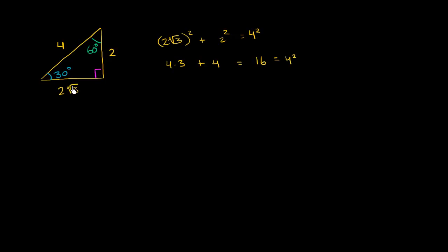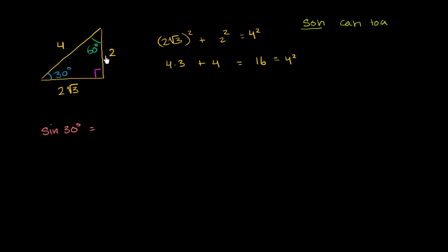The side opposite 60° is √3 times the other non-hypotenuse side. So this is a 30-60-90 triangle. Let's find the trig ratios. The sine of 30 degrees: SOH says sine is opposite over hypotenuse. The opposite side to 30° is 2, and the hypotenuse is 4. So sine of 30° equals 2/4 = 1/2. The cosine of 30°: CAH says cosine is adjacent over hypotenuse. The adjacent side is 2√3, over the hypotenuse of 4. So cosine of 30° = 2√3/4 = √3/2.